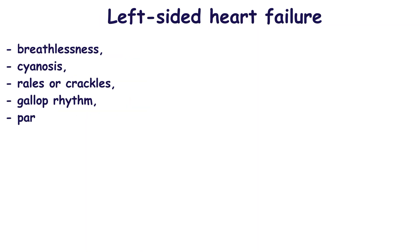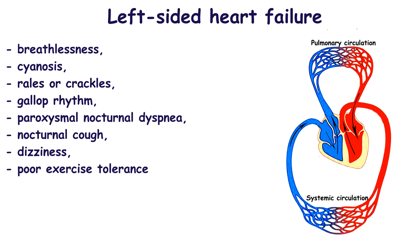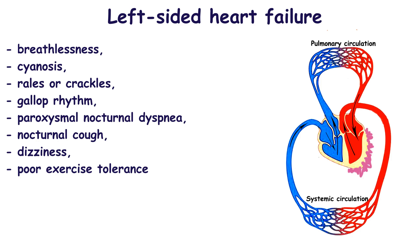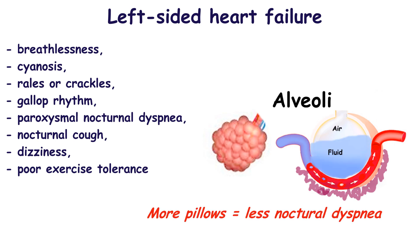Left-sided heart failure is characterized by breathlessness, cyanosis, rales or crackles, gallop rhythm, paroxysmal nocturnal dyspnea, nocturnal cough, dizziness, and poor exercise tolerance. Backup of blood in the pulmonary veins and capillary beds of the lungs leads to increased blood pressure in the pulmonary artery, resulting in movement of fluid from blood vessels to the interstitial space, causing pulmonary edema. At first fluid migrates to the interstitial space, then moves into the alveoli, impairing oxygen and carbon dioxide exchange. Patients usually use three or more pillows to reduce nocturnal dyspnea.